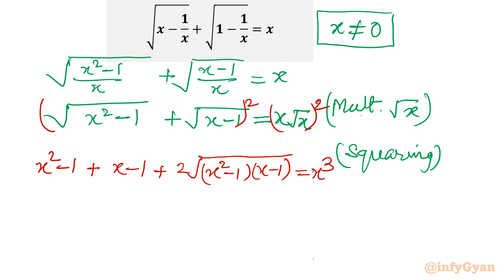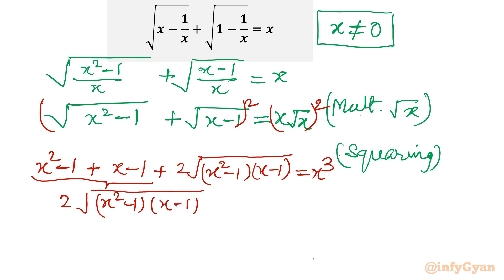Now I will take all four terms to the right-hand side. What is left on the left side is 2 times square root of (x² - 1)(x - 1). This value equals x³ - x² - x + 2.